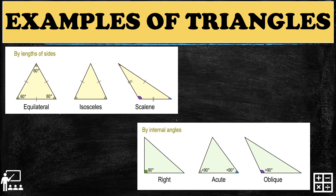Here are the examples of triangles, which I'm going to discuss in my next videos. Triangles can be classified by sides or by angles. By sides, there are equilateral, isosceles, and scalene triangles. By angles, there is the right angle, acute, and obtuse, or oblique triangle.